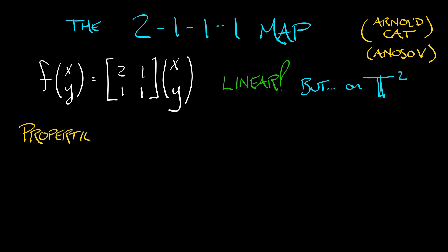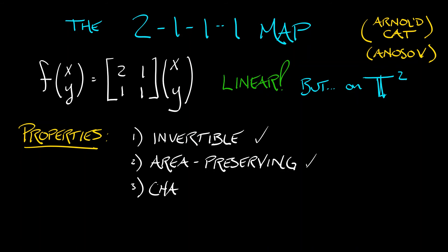Now, this has some interesting properties. It is invertible. You can take the inverse of that matrix, right? It is area-preserving. Why is it area-preserving? Oh, the determinant of that matrix is equal to 1. All right, so those are the obvious properties, but what is not obvious is that this is really a chaotic dynamical system, a very chaotic dynamical system.